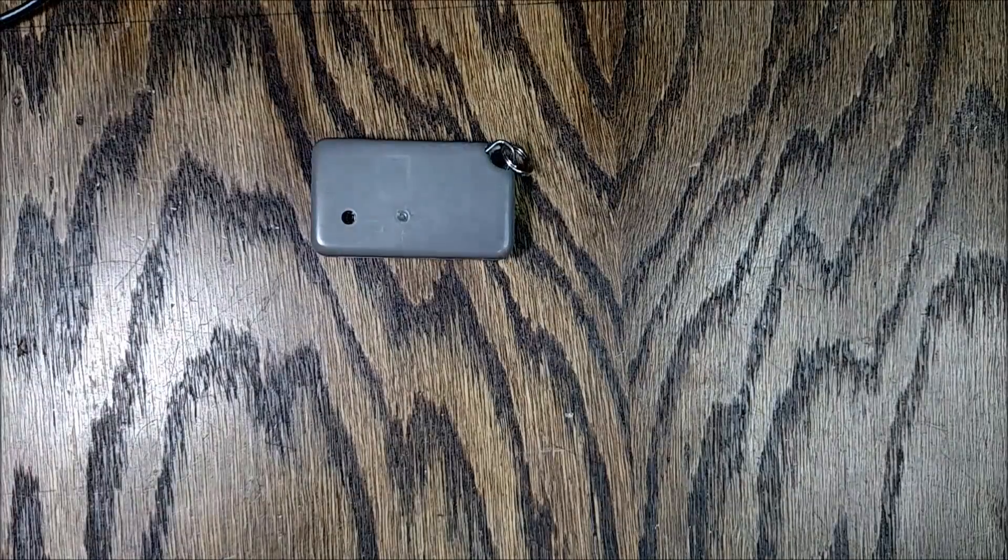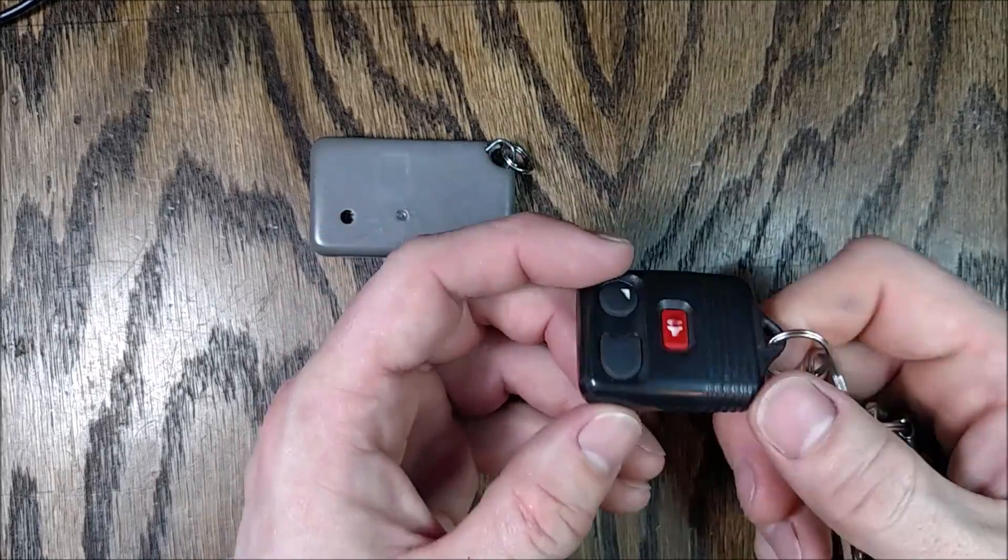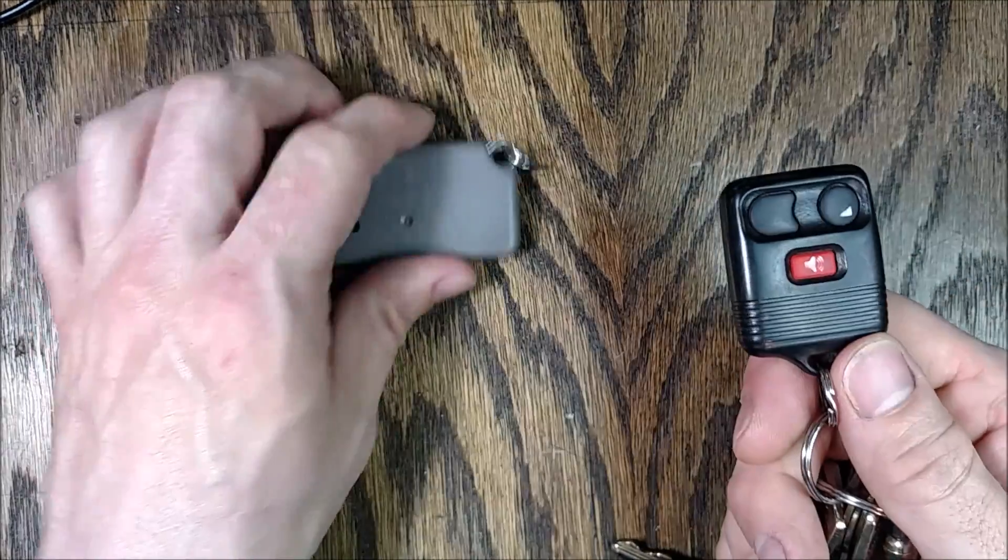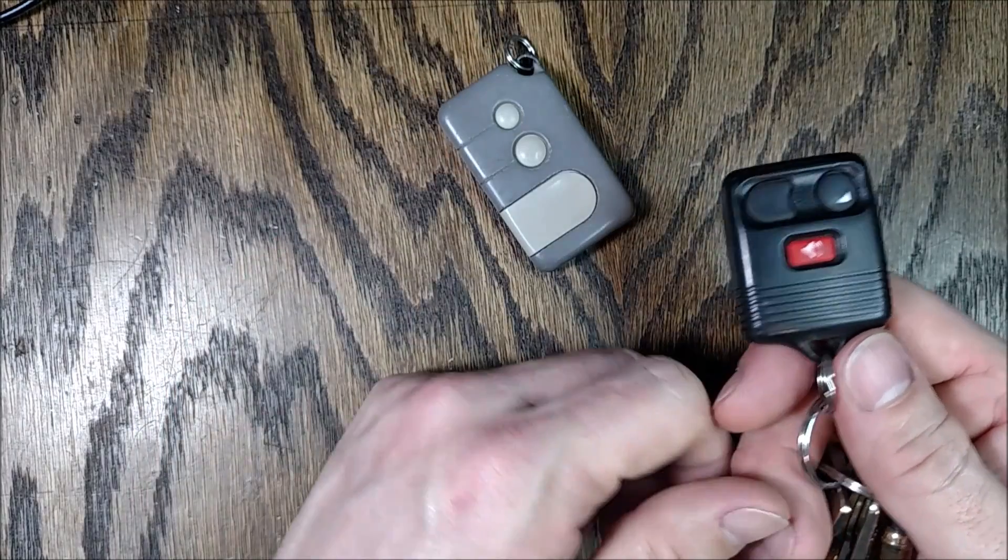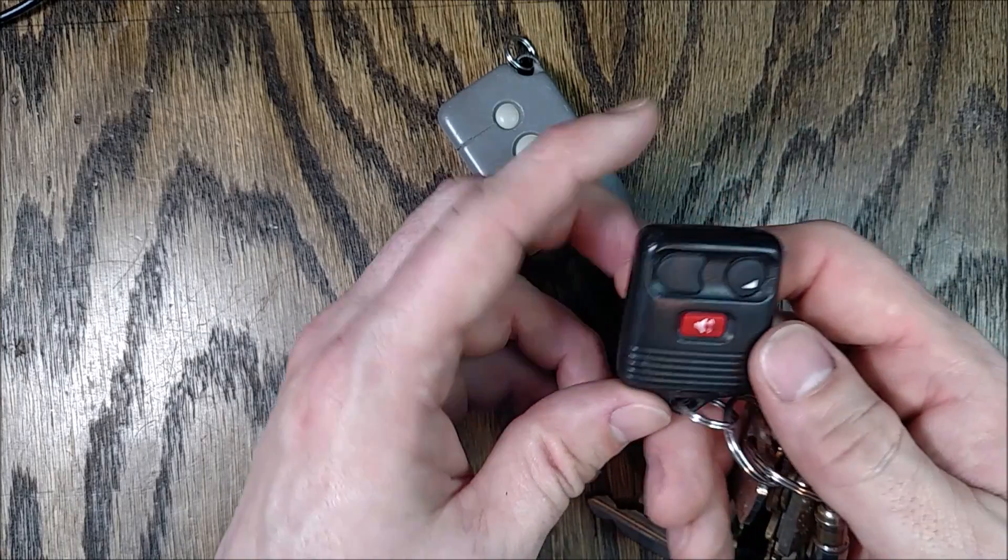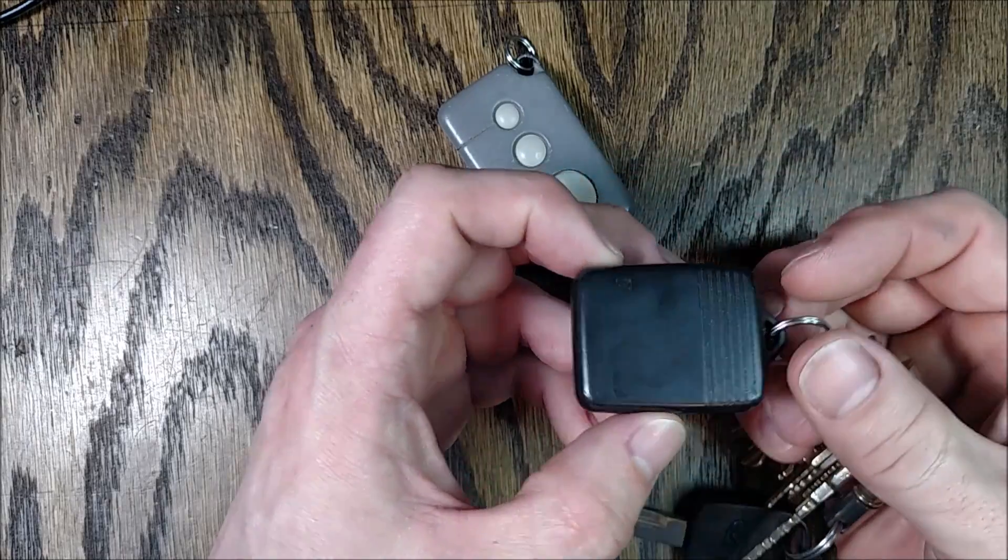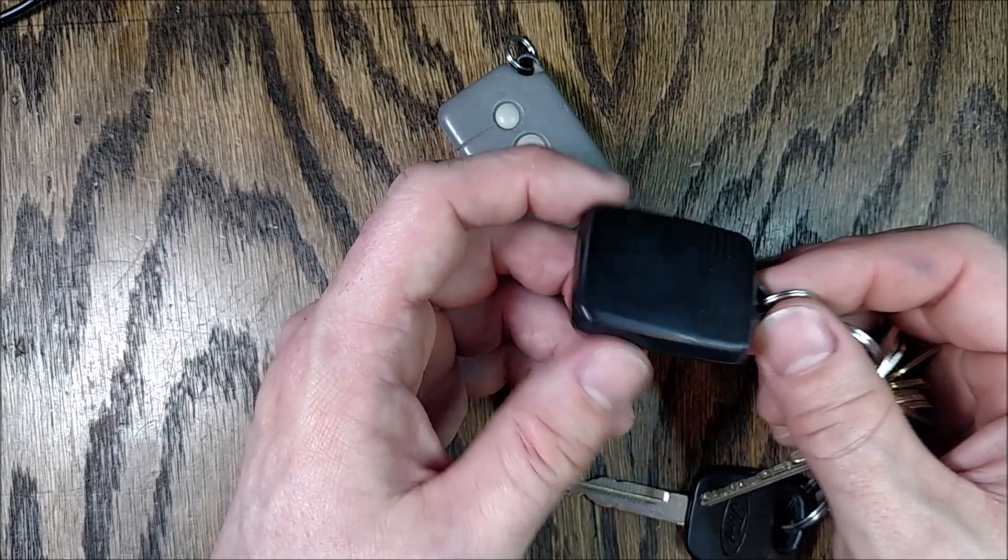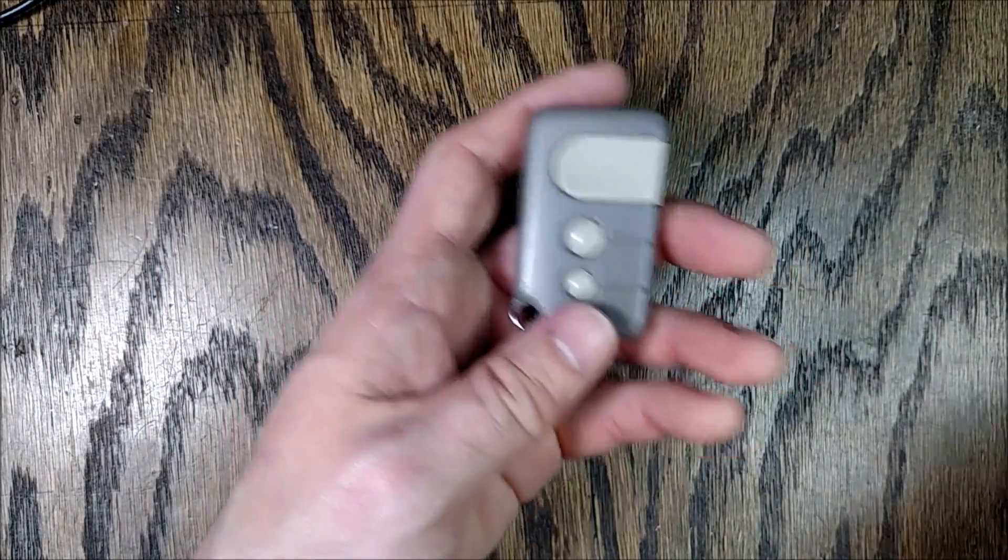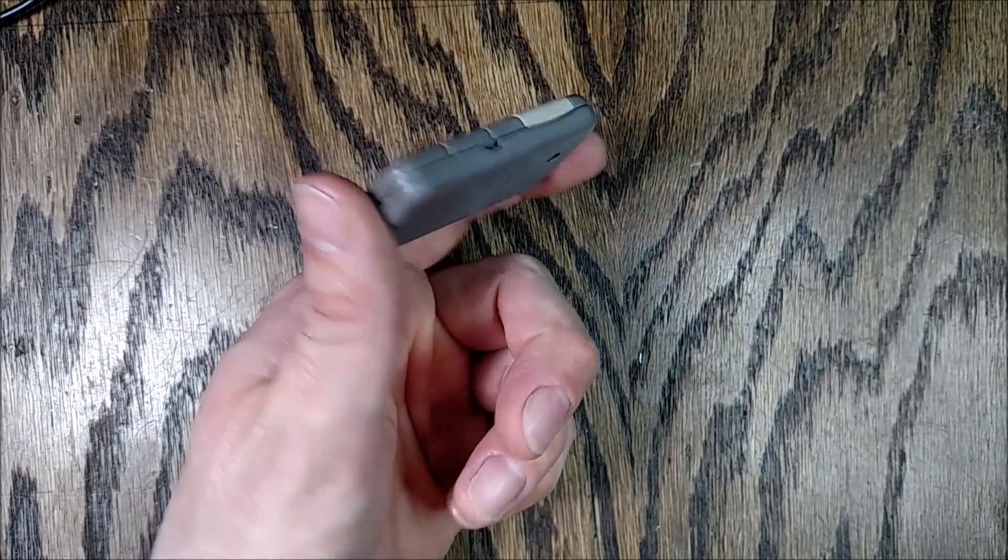But right beside it on my keychain I have one of these—this is the remote for my 15-year-old SUV, and it's never had a problem. It's bounced around right beside this one on my keychain and never had a problem. I've worn the lock-unlock icons off the buttons I've used it so much, replaced the batteries maybe once every five or six years, and it just works. So Craftsman, Chamberlain, you need to get one of these, look at how it's built, and make your remotes the same way.